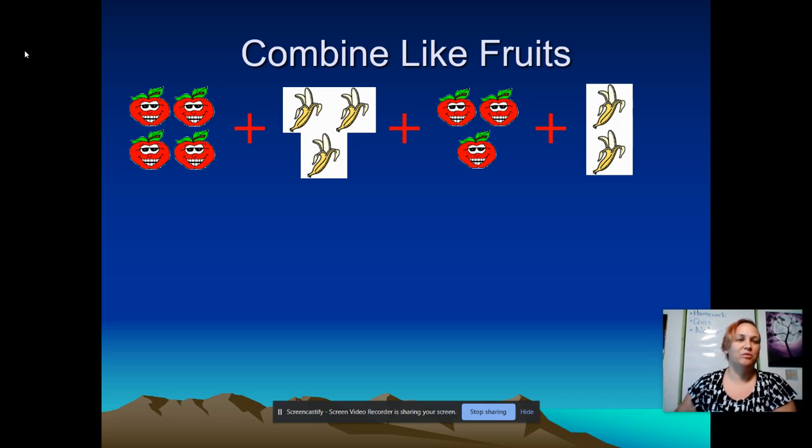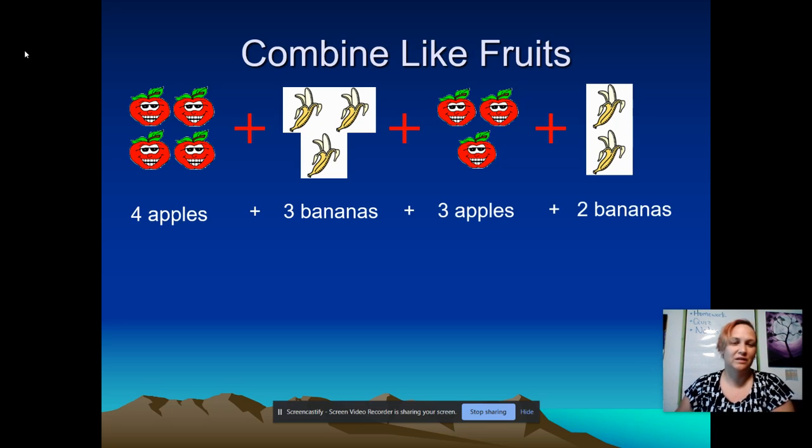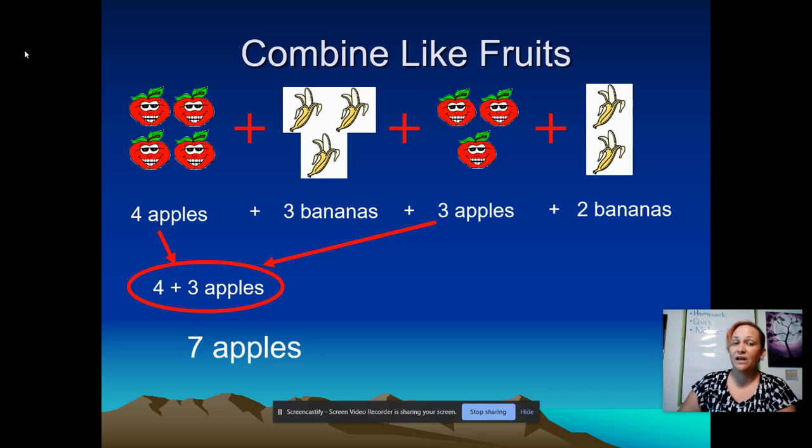So here I have a problem and I have four apples, three bananas, three more apples, and two bananas. And so I want to combine together my fruits so that I'm only listing each type of fruit one time. So I'm going to take my four apples and my three apples and I'm going to add them together and I have seven apples.